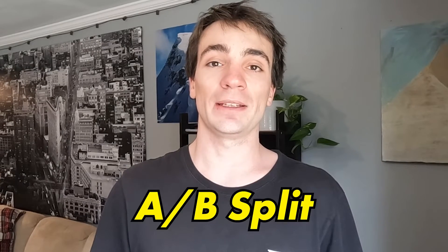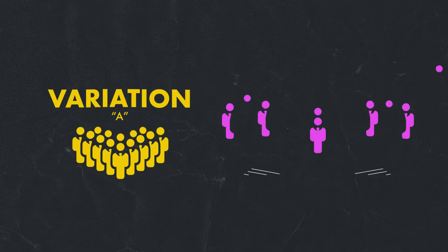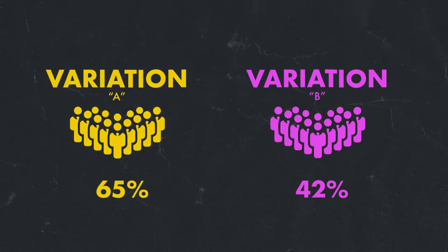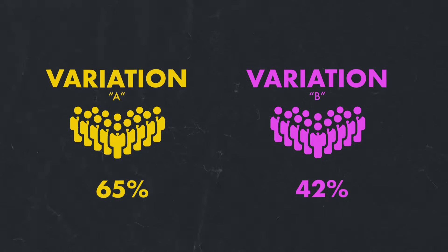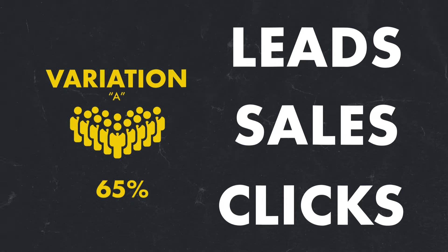Before we get into any of this, you might be wondering what exactly is an AB split test. A split test, which is also known as an AB split, is a simple way to compare two different variations online to see which variation performs better. This is done by showing variation A to a certain group of people and variation B to another group, then comparing results to see which is more effective — whether that's leads, sales, or clicks.